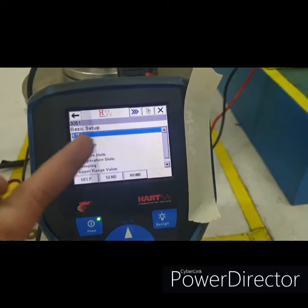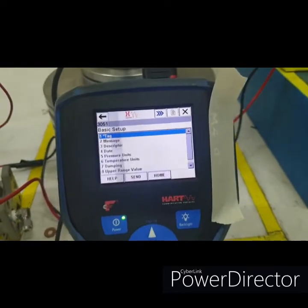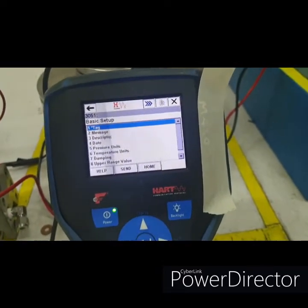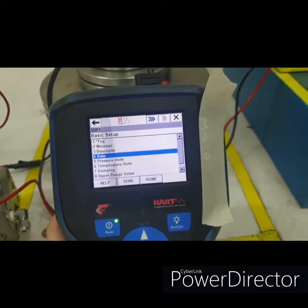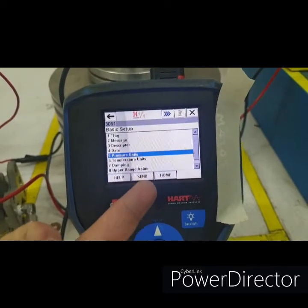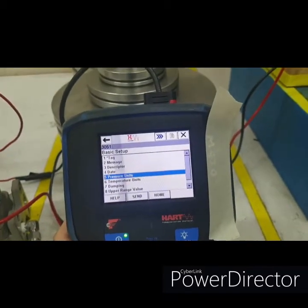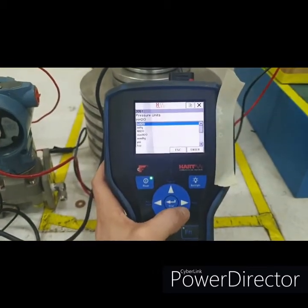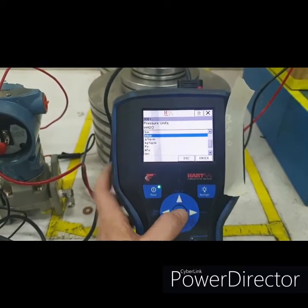If you want to download that configuration to the transmitter, you will press send. But since we have to change multiple parameters, we will change the other parameters. Let's say pressure units, because the default is in inches H2O, we're gonna change it to millibar. So we'll select millibar.